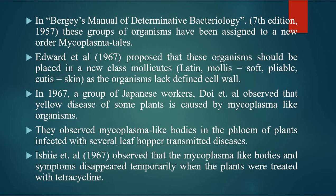Edward et al. in 1967 proposed that these organisms should be placed in a new class, Mollicutes — 'molli' means soft, 'cutes' means skin, as the organism lacked a defined cell wall. Also in 1967, a group of Japanese workers, Doi et al., observed that yellow disease of some plants is caused by mycoplasma-like organisms. They observed mycoplasma-like bodies in the phloem of plants infected with several leafhopper-transmitted diseases.